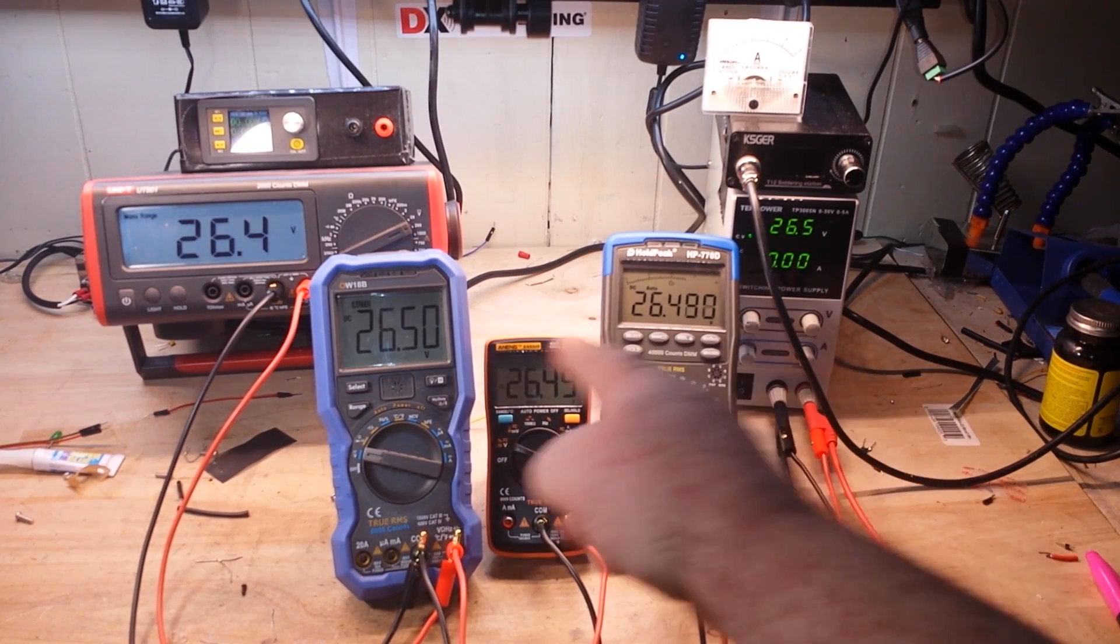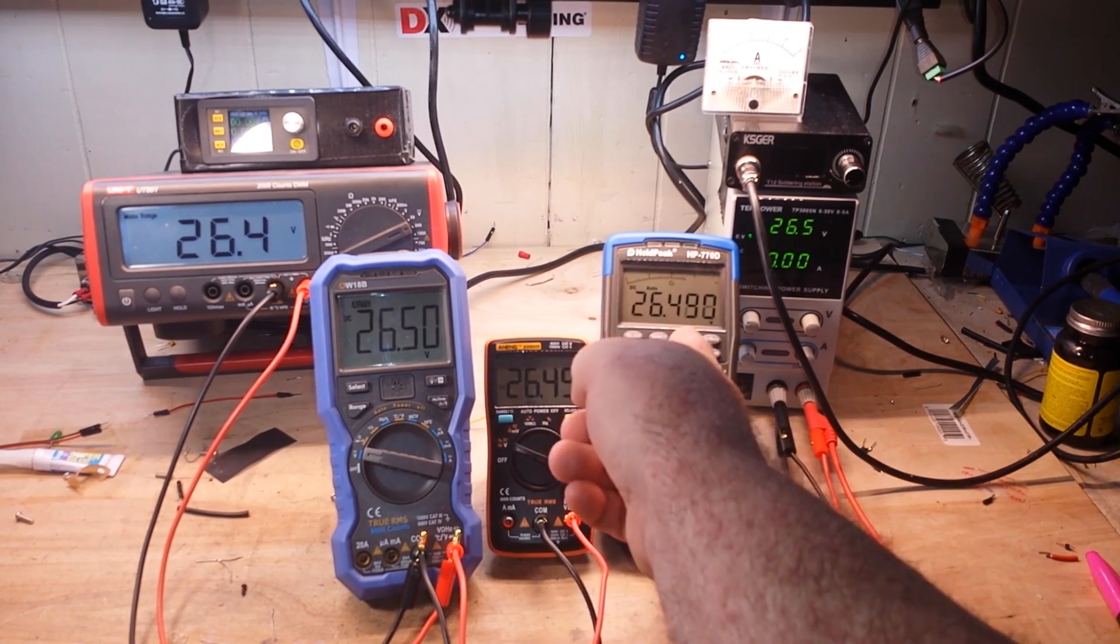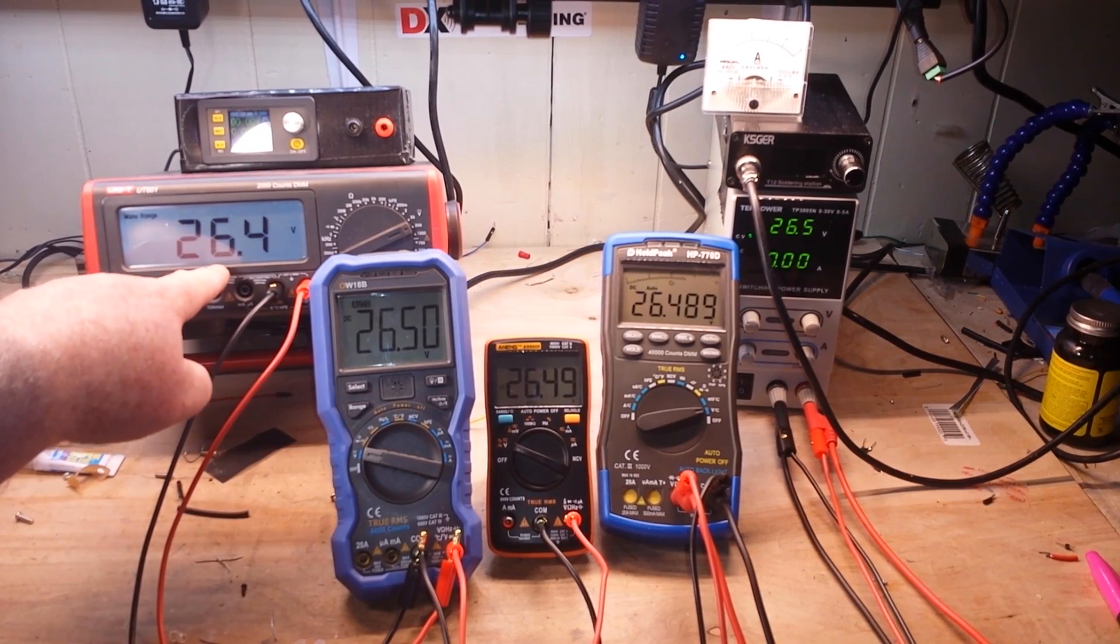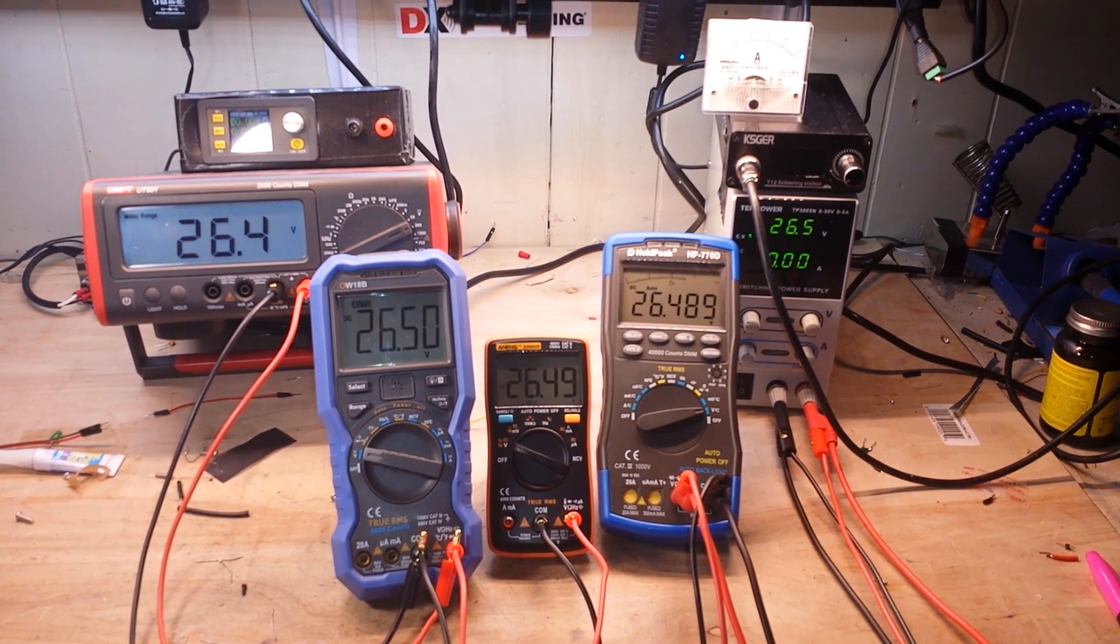Yeah, see 26, 20, two digit, two digit, three digit. And this one is actually dropped down to one digit.